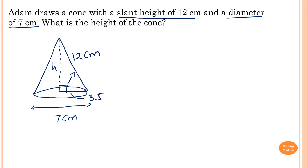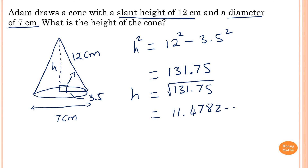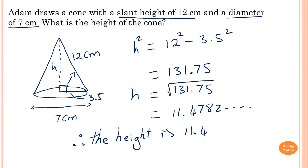We find H: since H is the shorter side, H squared equals 12 squared minus 3.5 squared, which equals 131.75. Therefore the height equals the square root of 131.75, which is 11.4782 and so on. Rounding to 2 decimal places, the height of the cone is 11.48 centimeters.